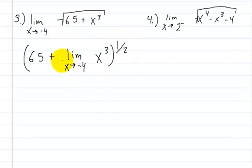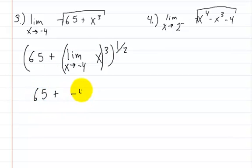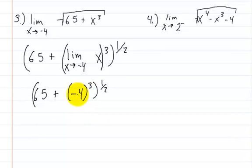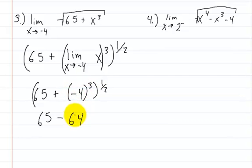...all to the one-half power, which is the same as a square root. We apply the cube to what's inside the limit. This gives us 65 plus negative 4 cubed, all square rooted. 4 cubed is 64, and a cube of a negative gives a negative, so we get 65 minus 64 to the one-half power, which is the square root of 1, equal to 1.